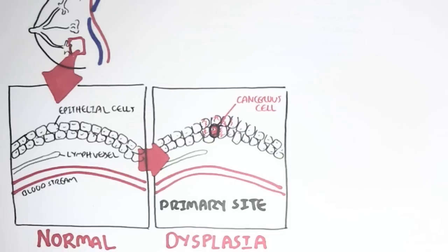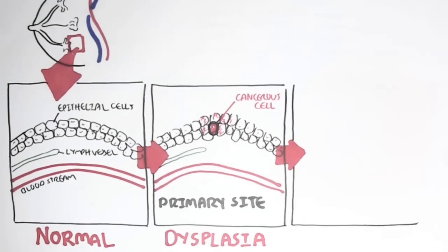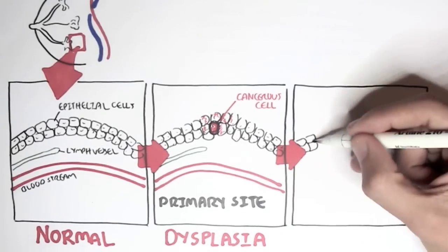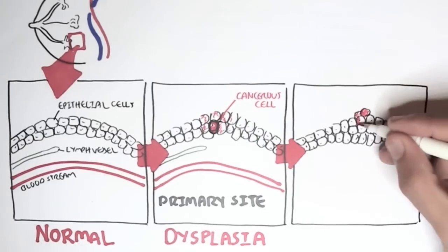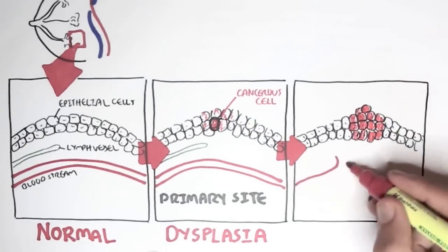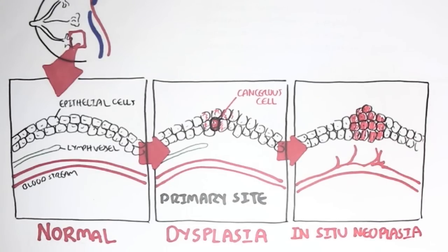Seeing that this cancer cell arose in the breast, the breast is the primary site of this cancer cell. This cancer cell, because it is not under normal body control, will begin to proliferate and differentiate. It will just keep dividing and dividing, forming a neoplasia, forming a tumor.